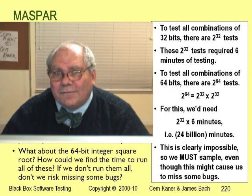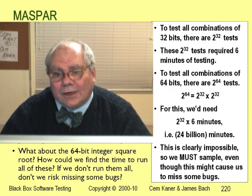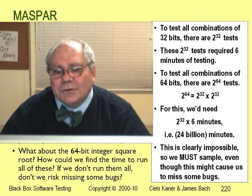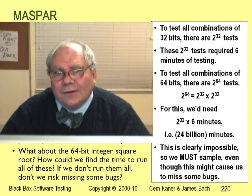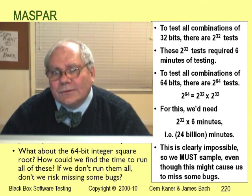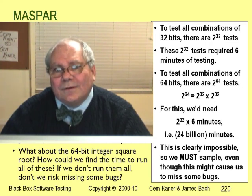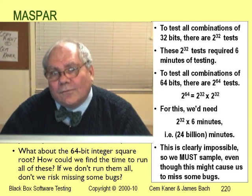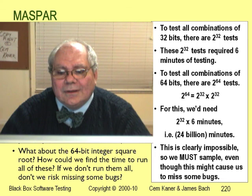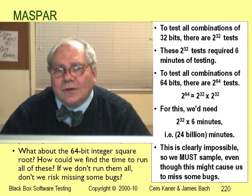Now consider the 64-bit function. For this you need even more luck. You have 2 to the 64 tests instead of 2 to the 32 — that's 24 billion minutes, or 49,000 years of computer time to test them all. You can't do that. So even though you have software with potentially life-critical implications, you can't look in all the places because you just don't have enough time. There are other strategies for improving software reliability — careful code reviews, test-driven programming — but from a black box testing viewpoint, there are more tests to run than you can possibly run.